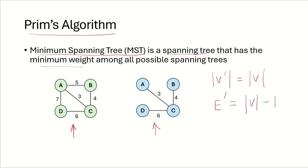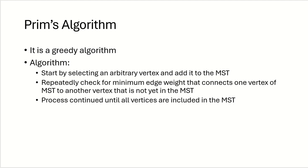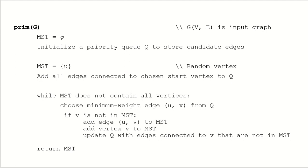Let's take a look at Prim's algorithm, which is used to find a minimum spanning tree. It is a greedy algorithm, just like Kruskal's algorithm that we discussed in the previous lecture. We start by selecting an arbitrary vertex and add it to the MST, then we repeatedly check for the minimum edge weight that connects a vertex of the MST to another vertex not yet in the MST.